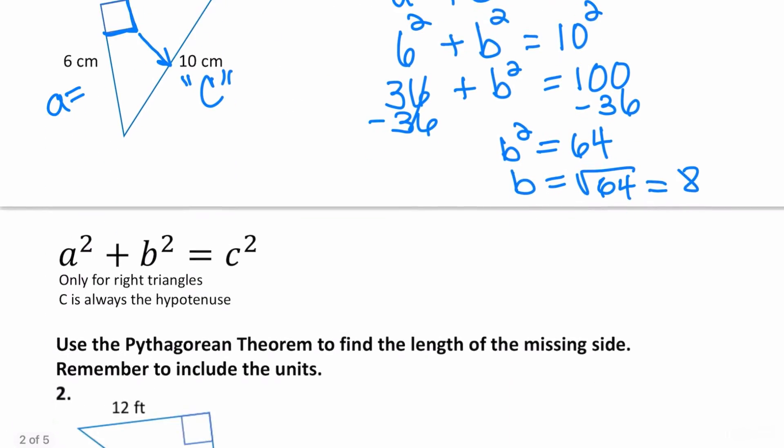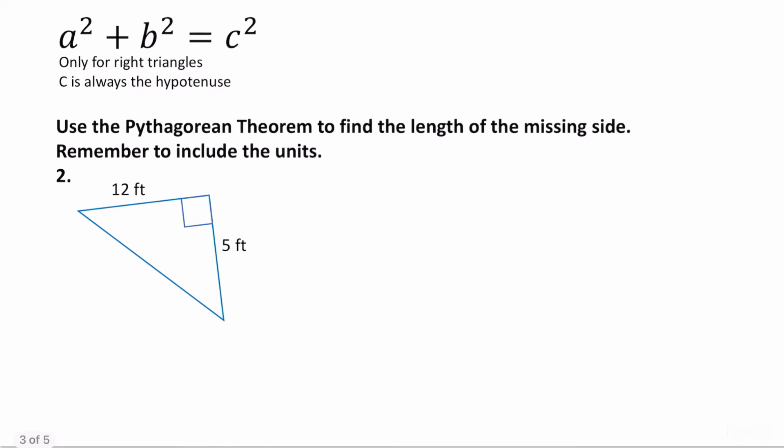Let's look at another example. Same question. Using the Pythagorean theorem, find the length of the missing side. Here is my right angle. Opposite of your right angle is your hypotenuse. So in this particular case we are looking for the hypotenuse.